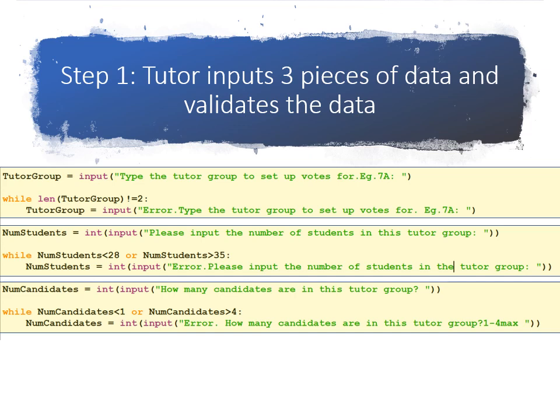And finally, the number of candidates in the class. So each class has at least one candidate and maximum four candidates. So number of candidates is equal to input, how many candidates are in this tutor group. While the number of candidates is less than one or it's greater than four, that's an error. Those are the first three pieces of data to be input and validated.